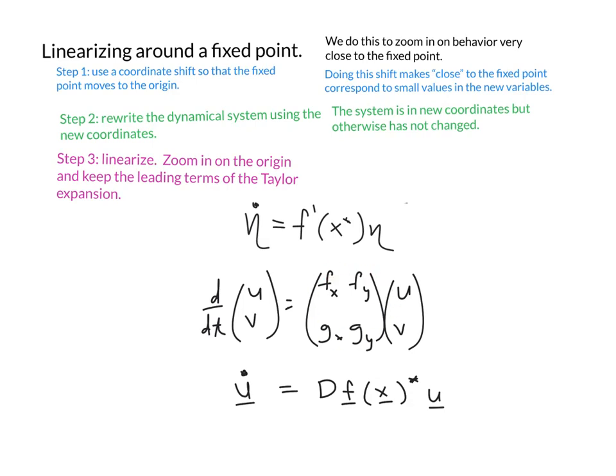This is the matrix that we're going to end up analyzing. And once we know its eigenvalues, we'll understand exactly what type of fixed point we have based on this linearization, based on knowing what happens in the linear system. Because we made this linear system by zooming in very closely on the fixed point in our original nonlinear system.